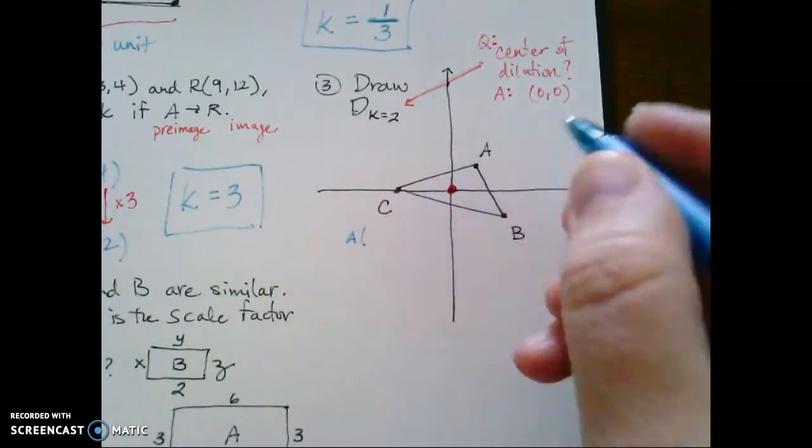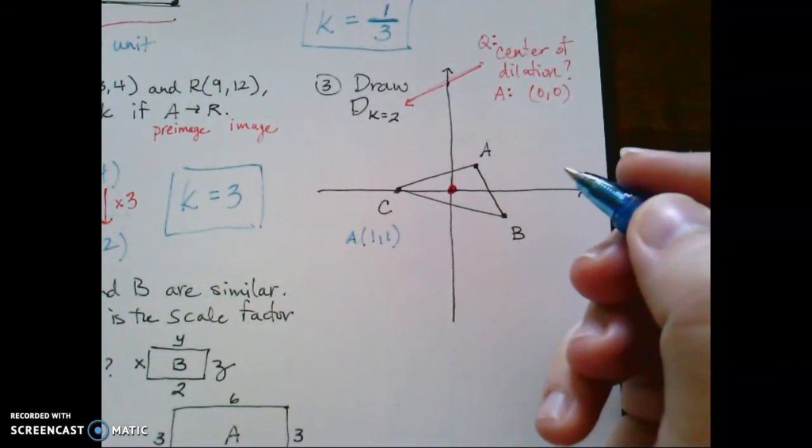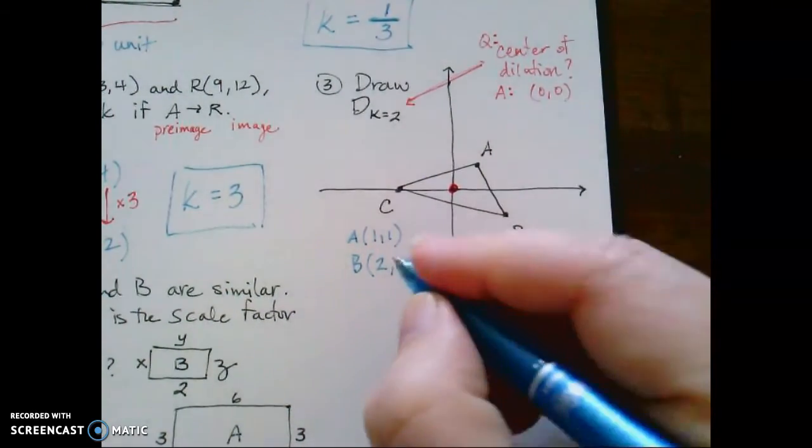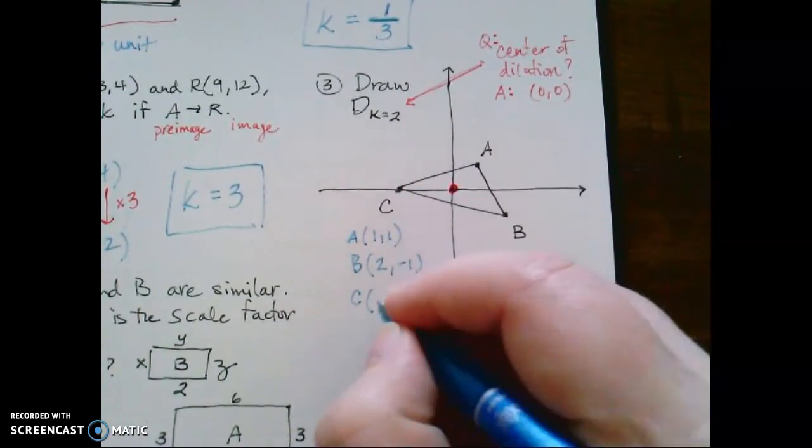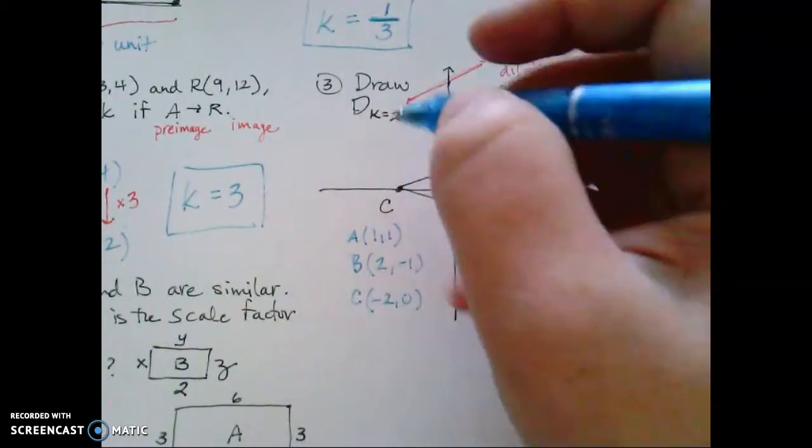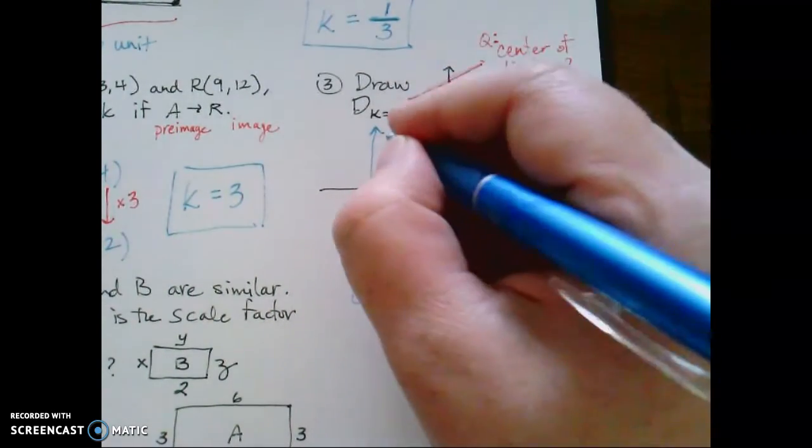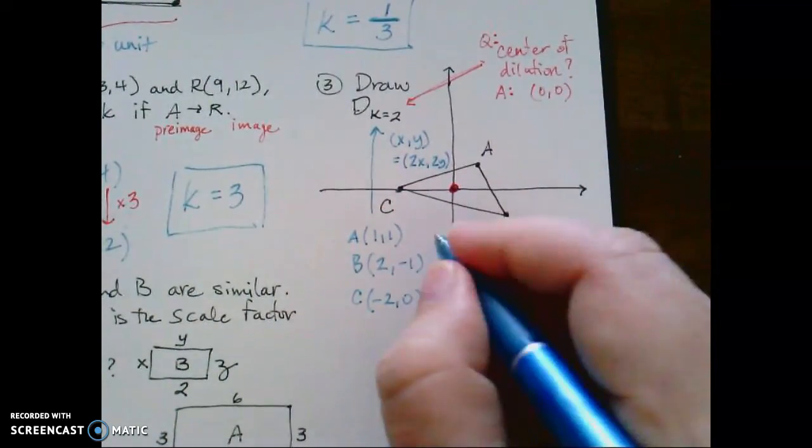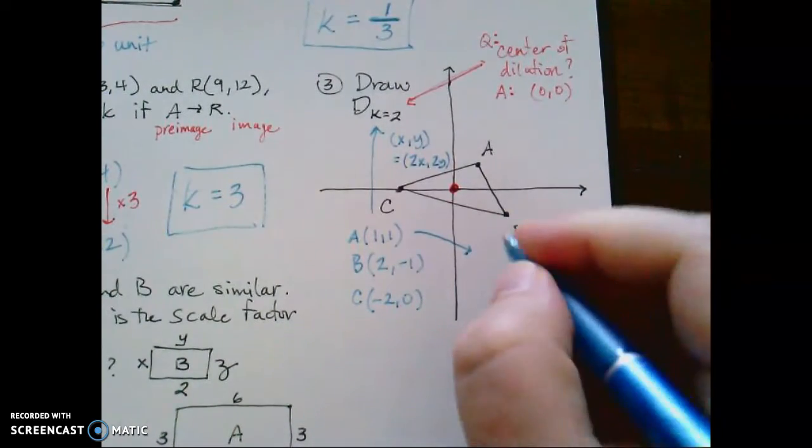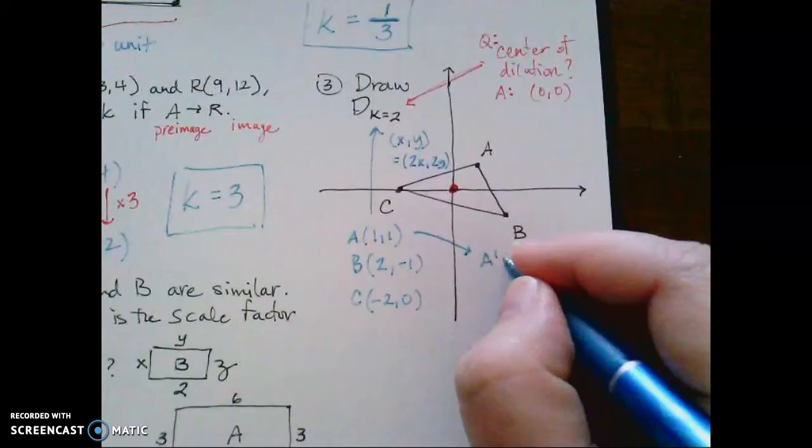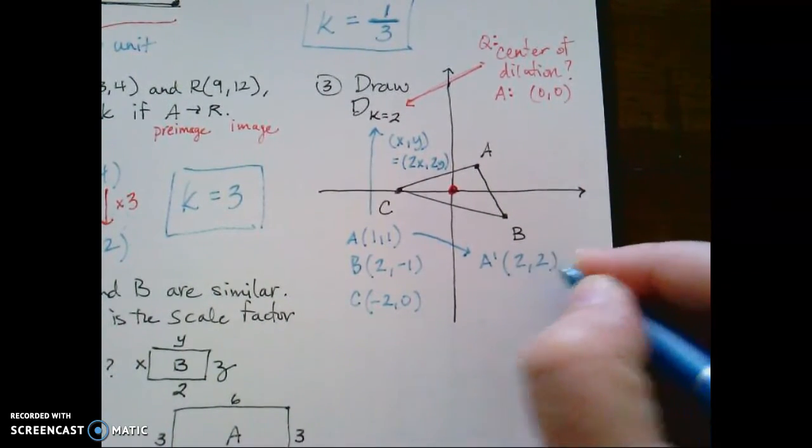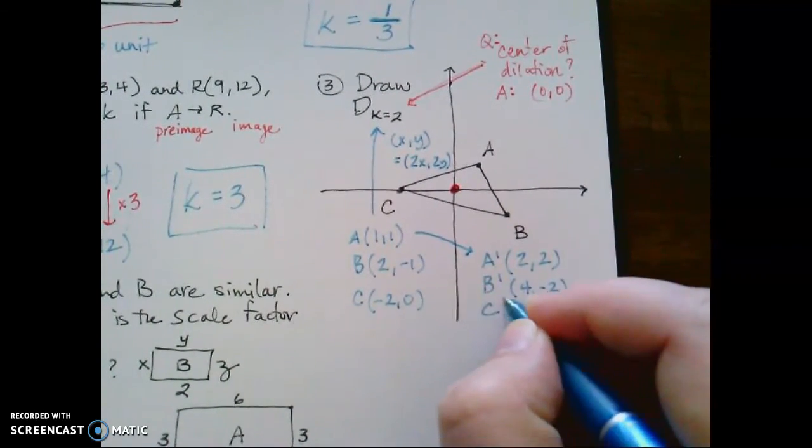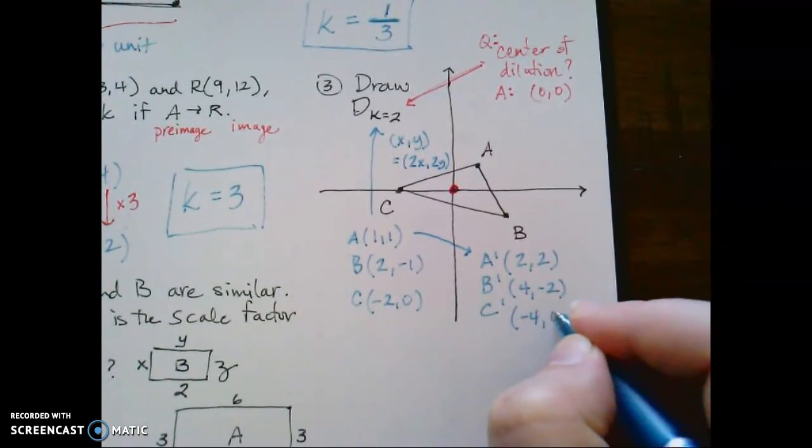If A is located at 1-1, B is located at 2-1, and C is located at negative 2-0, then that scale factor of 2 means I'm going to take each x and each y, and I'm going to multiply them by 2. So then that means, and I'm a little off-center here, I apologize, that means that A prime will be located at 2-2, B prime would be located at 4-2, and C prime would be located at negative 4-0.